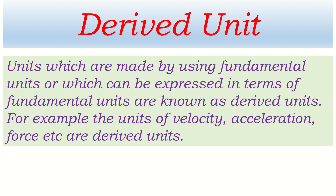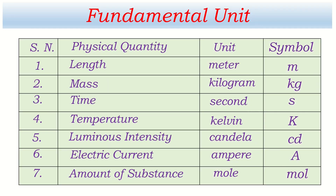Now, there are seven fundamental units. They are: length, mass, time, temperature, luminous intensity, electric current, and amount of substance. These fundamental physical quantities are measured in meter, kilogram, second, kelvin, candela, ampere, and mole respectively. These are the fundamental units. These seven fundamental physical quantities are also called the seven dimensions of the physical world. Their SI symbols are m, kg, s, K, cd, A, and mol.